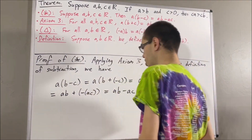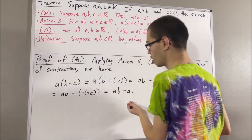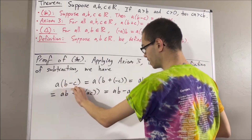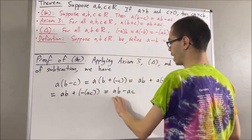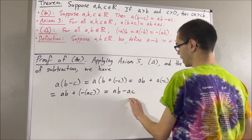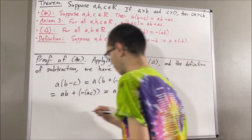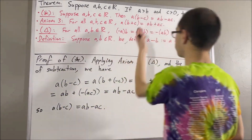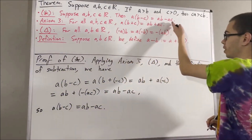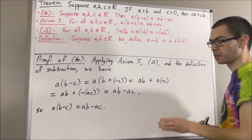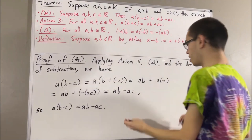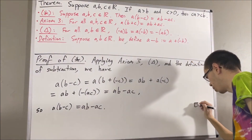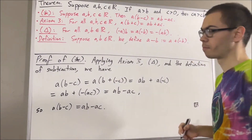And so, through this chain of equalities, we have shown that A times B minus C is equal to AB minus AC. And that is exactly what we wanted to show. So this proves our preliminary result, which we label star.